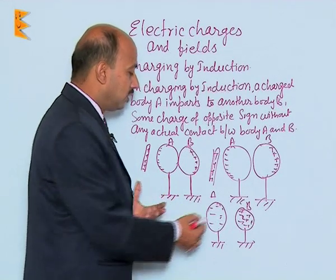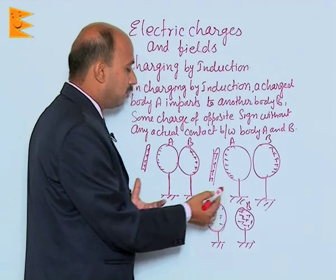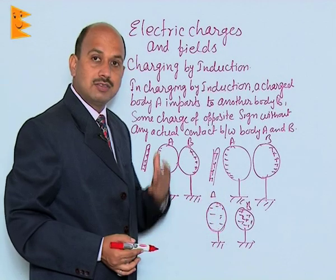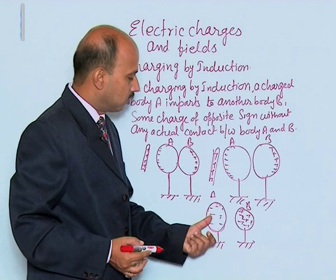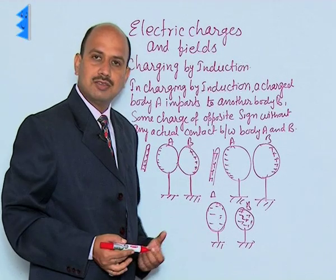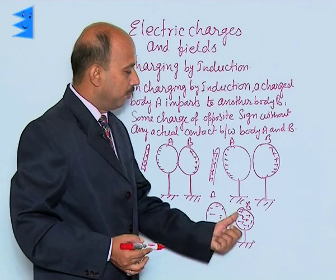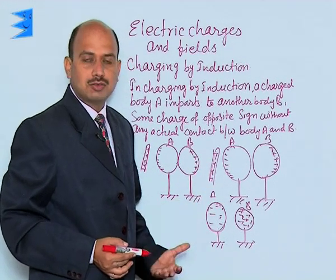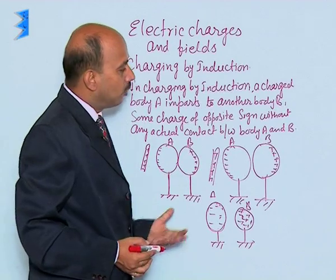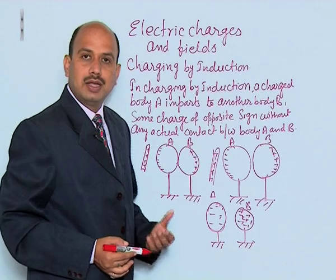Sphere A now has only an excess of electrons, so it is called negatively charged, and body B is called positively charged. This is the way of charging a body by induction.